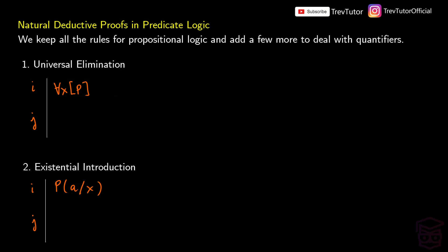We're going to revisit natural deductive proofs, but this time in predicate logic. We're going to talk about universal elimination, introduction, as well as existential introduction and elimination. All of the rules from propositional logic are kept. If you're not familiar with natural deduction in propositional logic, look earlier in the playlist. We're going to start with the easiest two rules and then move on to ones that are a little bit more complicated, and we'll talk about the intuition behind these as well.